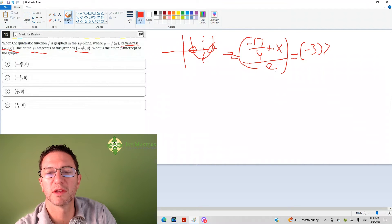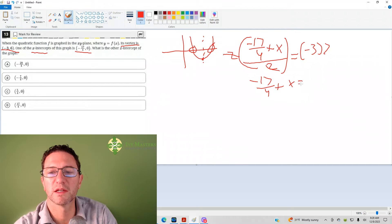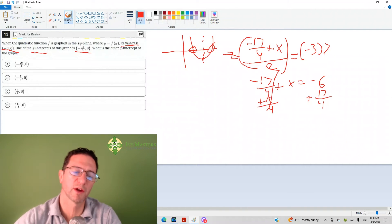Now if I multiply both sides by 2, this cancels. Negative 17 over 4 plus x equals negative 6, then I'm going to add 17 over 4 to each side of the equation and solve.